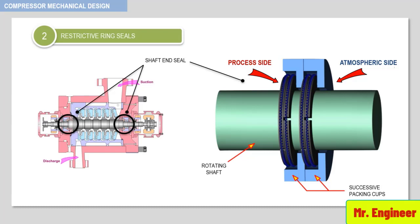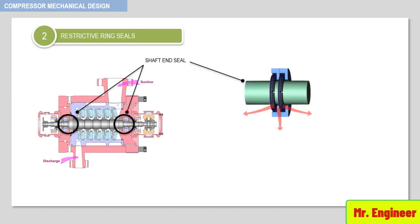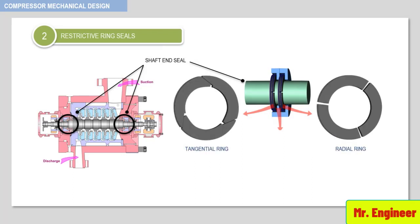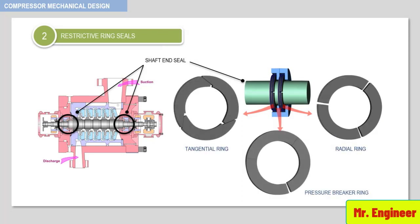The packing rings can be classified as seal, radial, or pressure breaker rings. All of these types of rings are made of three segments which mate each other, so as to form an arrangement as shown in these examples.